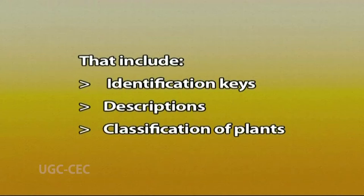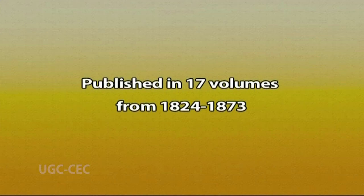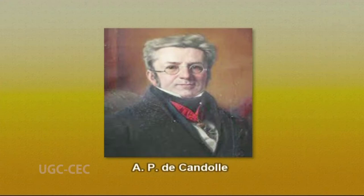The foremost is the Prodromus Systematis Naturalis Regni Vegetabilis, published in about 17 volumes from 1824 to 1873 by A.P. de Candolle. The Prodromus was intended to treat all species of seed plants but in actuality covers only the dicots. Although the title 'Prodromus' indicates that de Candolle considered it only a preliminary treatment, it still remains the only comprehensive taxonomic revision for many genera.